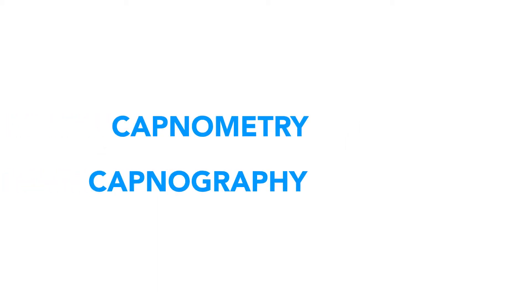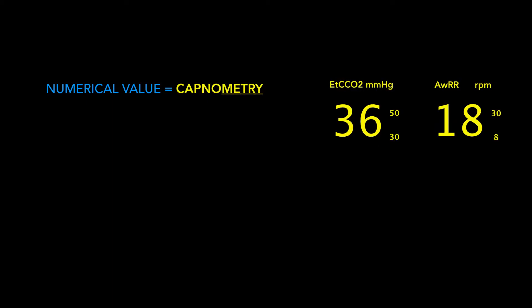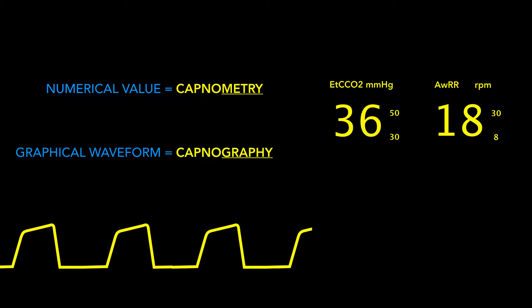Number one: capnometry versus capnography. They're two different but related things. The numerical value displayed on your monitor is capnometry — think 'metry,' metric, measuring numbers. The graphical waveform is capnography. It's the squiggly line that runs across the bottom of your monitor screen indicating that your patient is still breathing — well, hopefully still breathing. If they're not, you should probably do something about that.